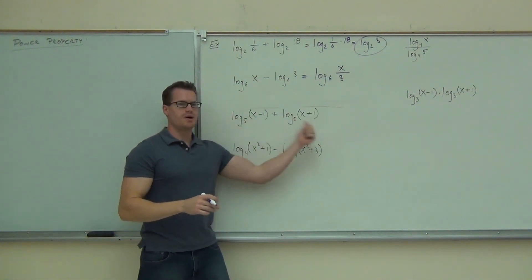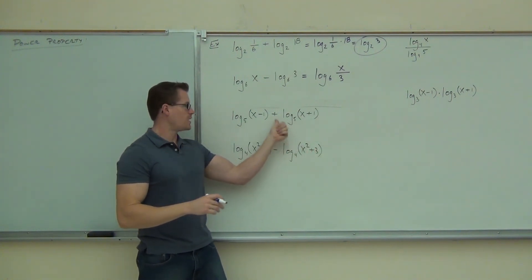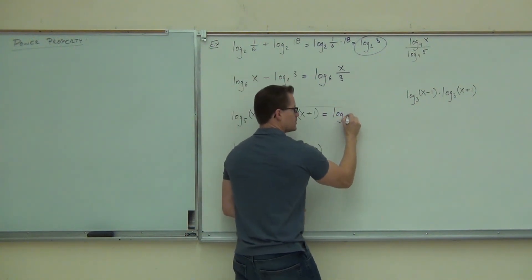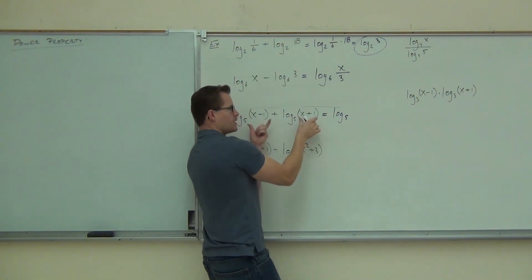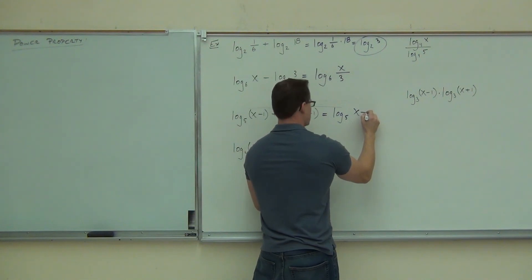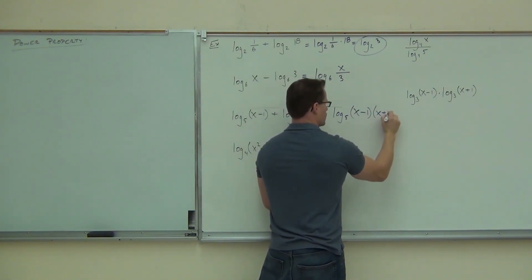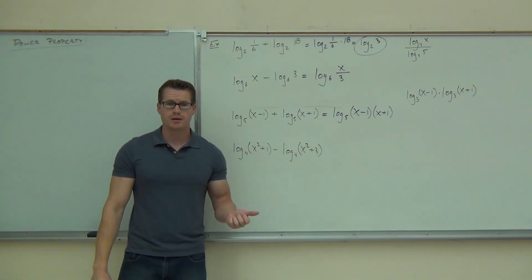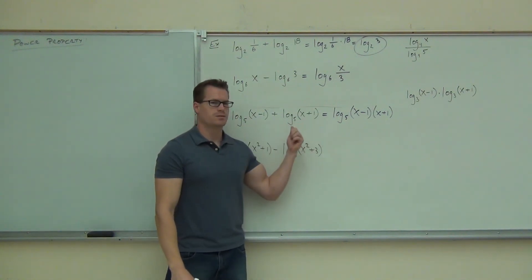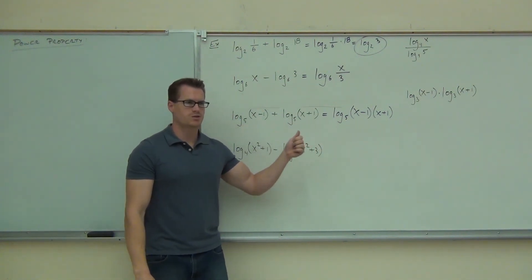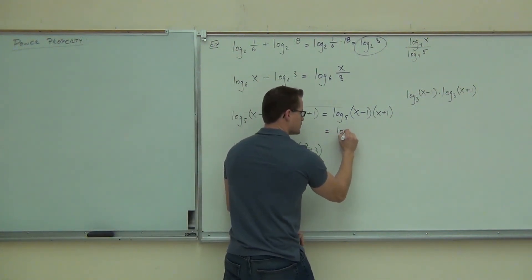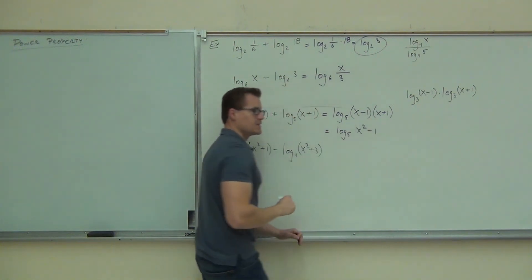All right. Next up, how about this one? Can you combine these two? Sure. Yeah. It's plus, same bases. That means we're going to have a single log base five. Are we going to add those or multiply those? Multiply those. So you should have x minus one, x plus one. Could you distribute that? Yeah, if you wanted to. You get x squared minus one. If you distribute, you get x squared minus one. Just make sure you have parentheses around and you can't leave it without parentheses.